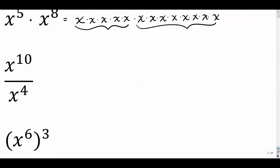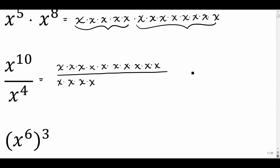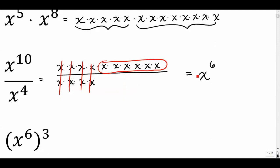So we have ten of these x's on top divided by four of them on the bottom. The rule here is that we're just going to take the base, keep it, and subtract the exponents. Here's how we get that: we have x on top, x on bottom — they cancel. Four of them cancel out, leaving you with six of them, which is where we get x to the sixth.